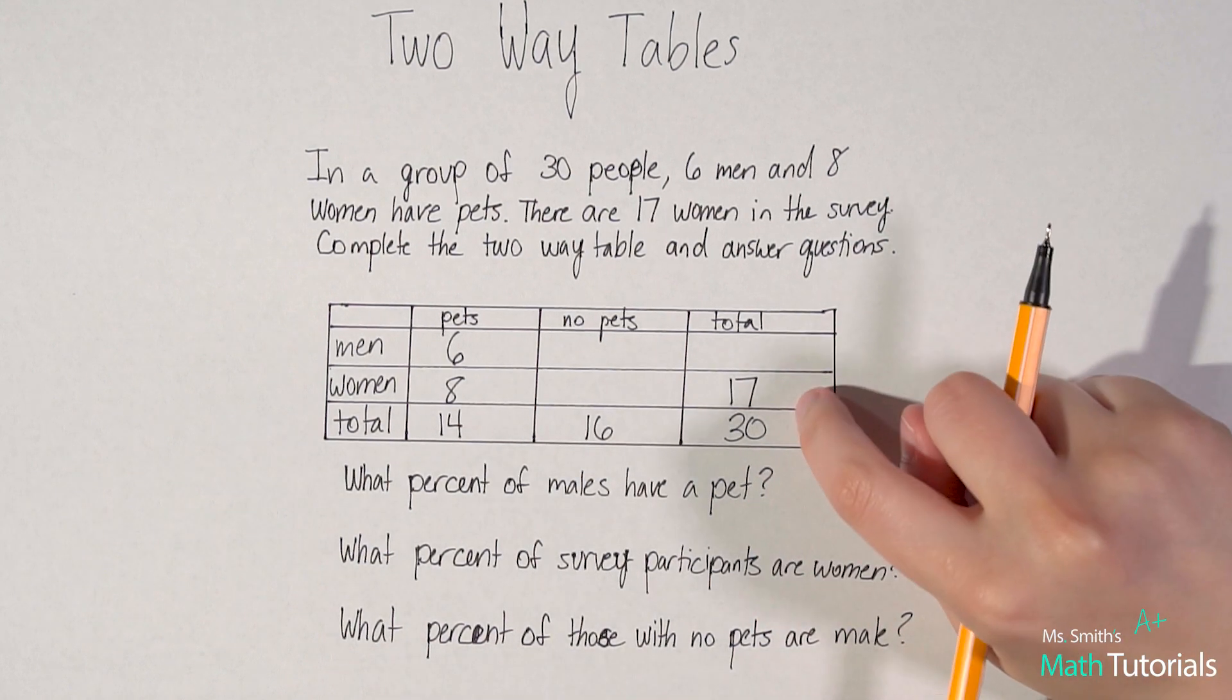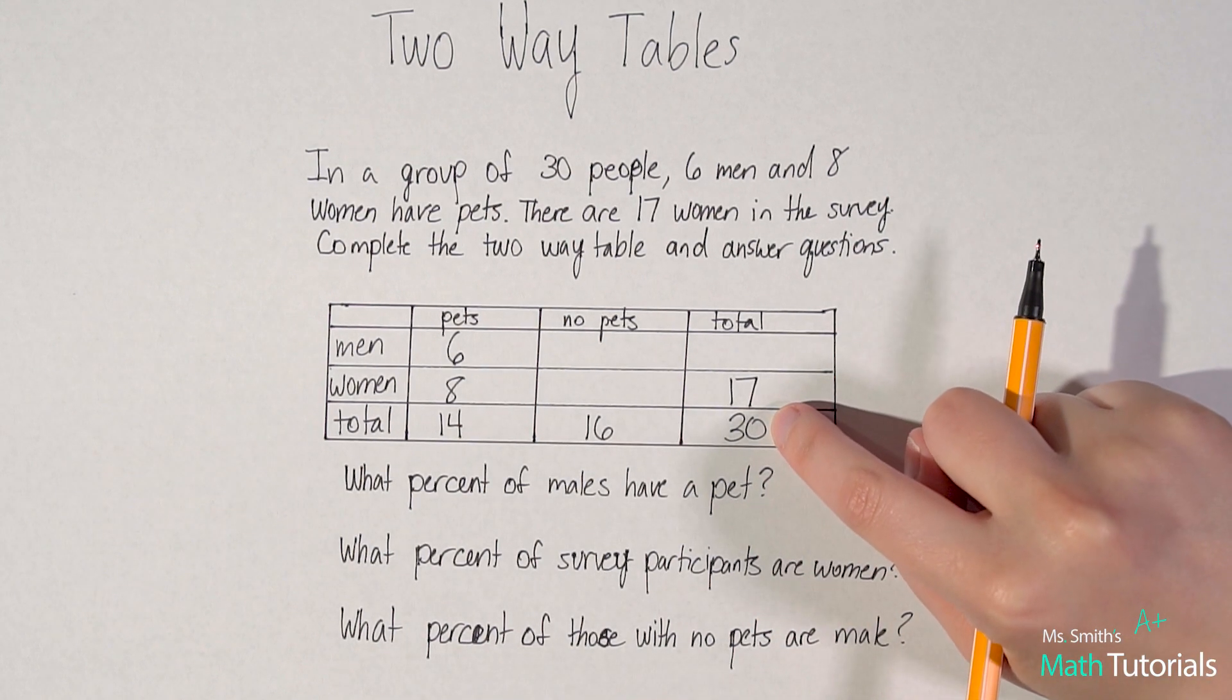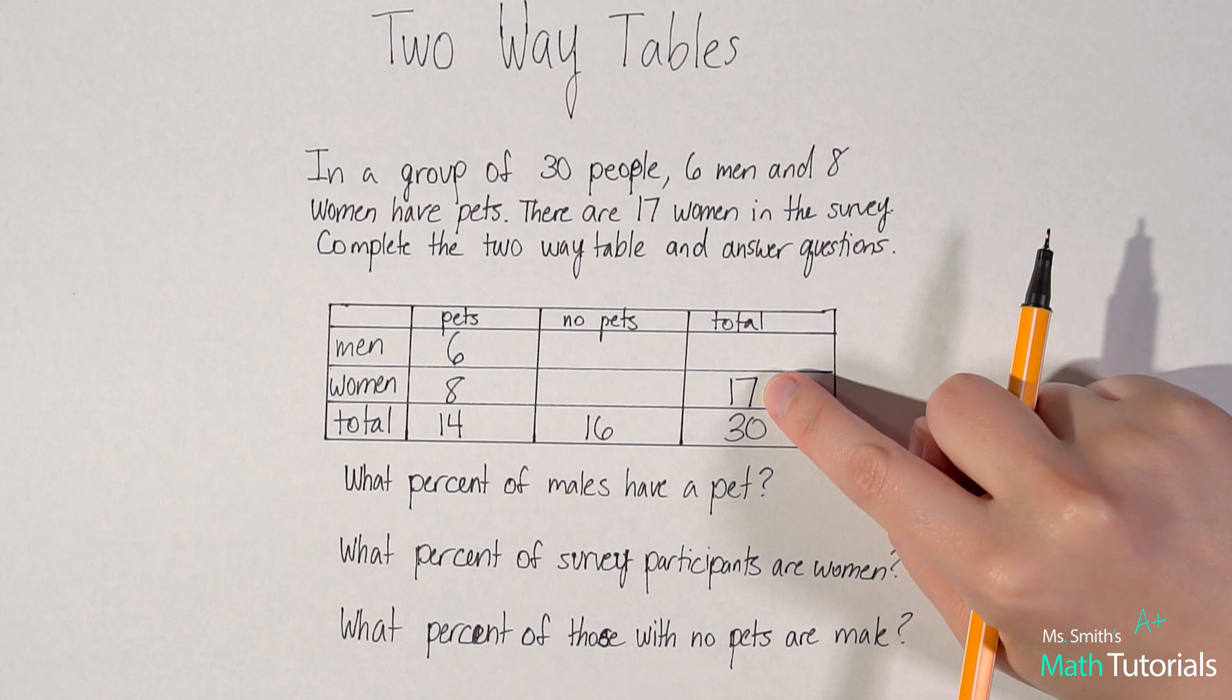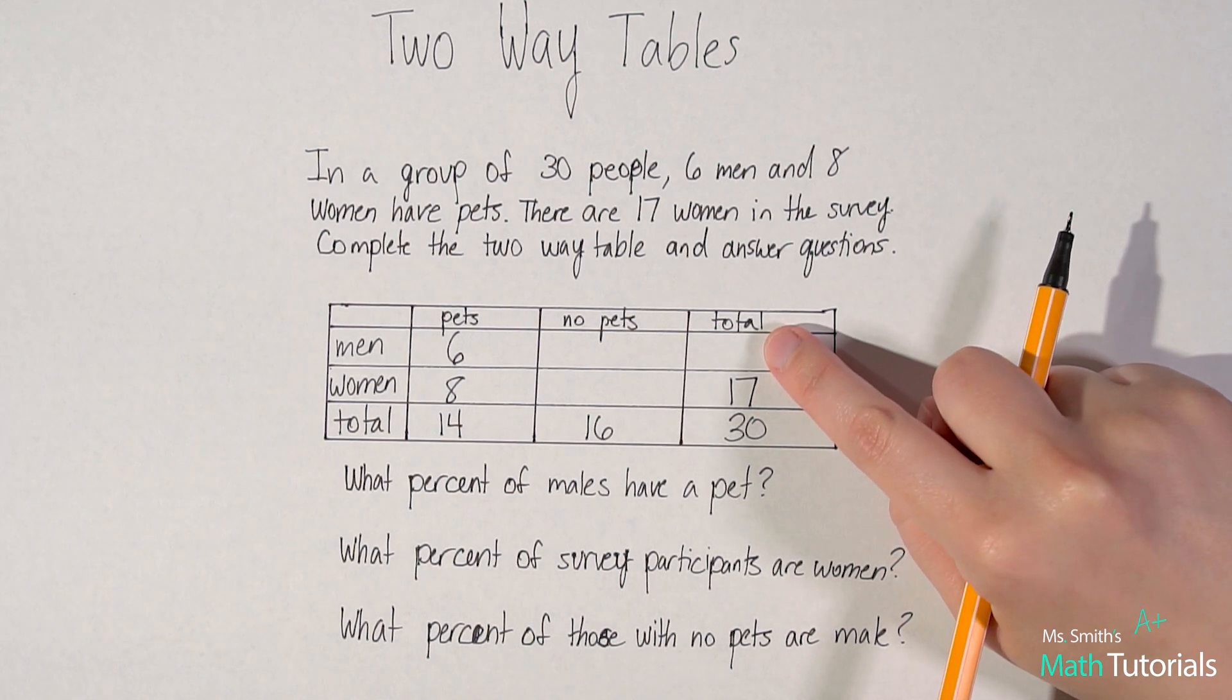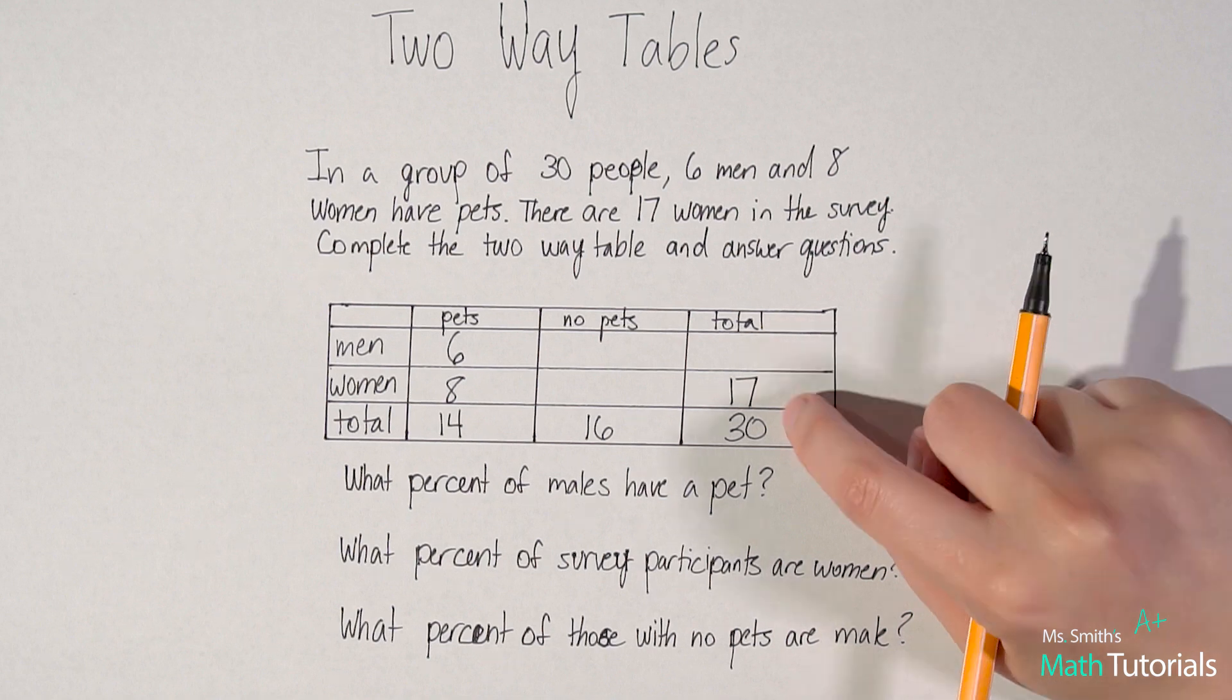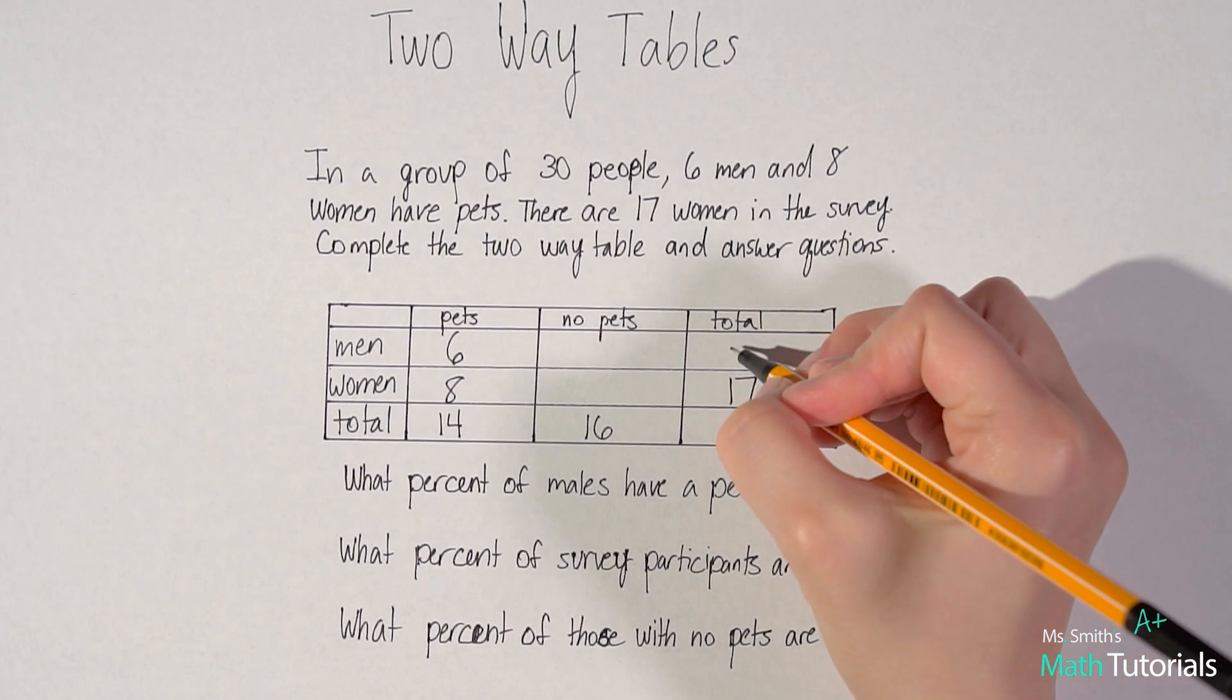All right. And then I look here and I say, all right, I've got a total of 30 people and I know 17 of them are women. So can I do 30 minus 17? And that will tell me how many men there are? Yeah. 30 minus 17 is 13.